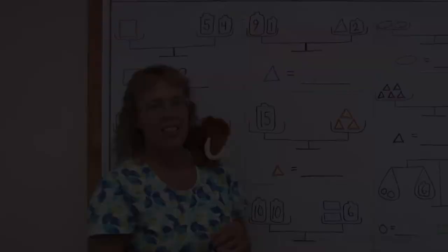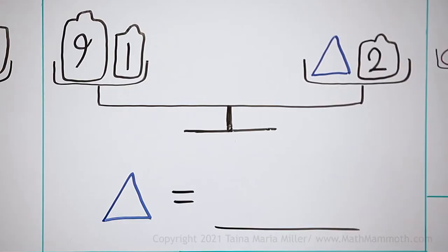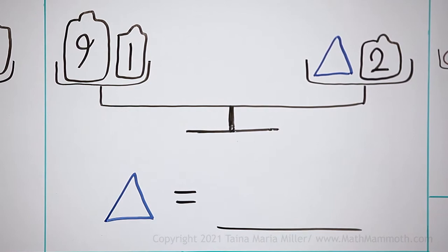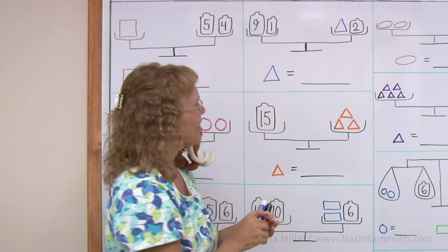Over here, can you tell how much this blue triangle weighs or is equal? On this side we have 10. On this side we have the triangle and 2. This side has to weigh 10 in total for the seesaw to be balanced. So the triangle must be 8.